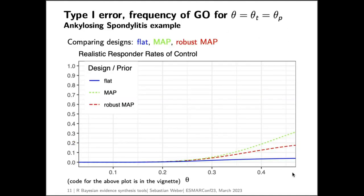RBesT allows you to compare the operating characteristics of various designs in a very straightforward way — it calculates things analytically behind the scenes and is therefore very fast and accurate. Instead of tables, you can use graphs to compare different designs. When using no prior, you see the type one error — the frequency of a 'go' decision when response rates are exactly the same in both groups — which stays below five percent. When using the MAP prior for the control group, the type one error increases as we move away from what the prior expects.